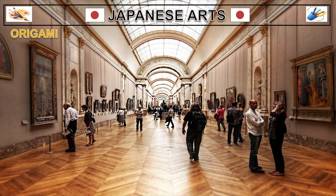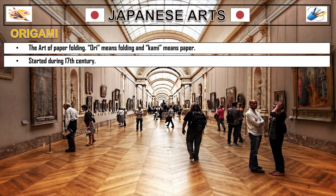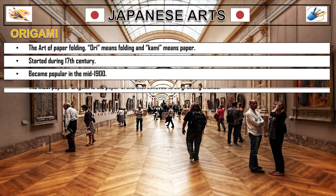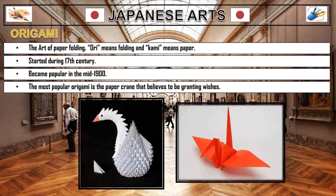Another famous Japanese art is origami, or the art of paper folding. 'Ori' means folding and 'kami' means paper. It started during the 17th century but became popular in the mid-1900s. The most popular origami is the paper crane, which is believed to grant wishes.